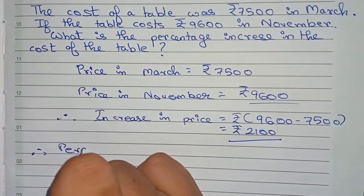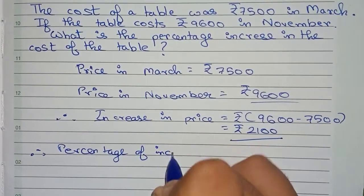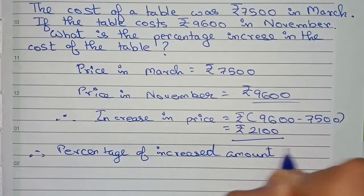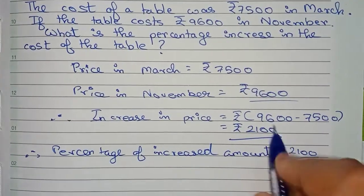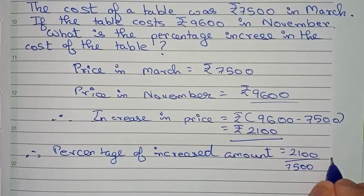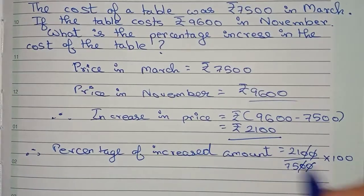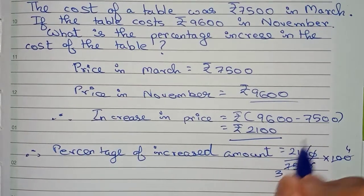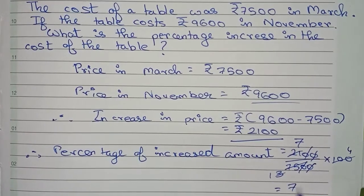Now we have to find the percentage of the increased amount. We put the increase amount, that is 2100, divided by the original amount, that is 7500, into 100. We simplify by cutting the zeros, then divide 75 and 100 by 25 to get 3 and 4, and 2100 and 75 simplify so 21 and 75 reduce, giving 7. So it becomes 7 into 4.